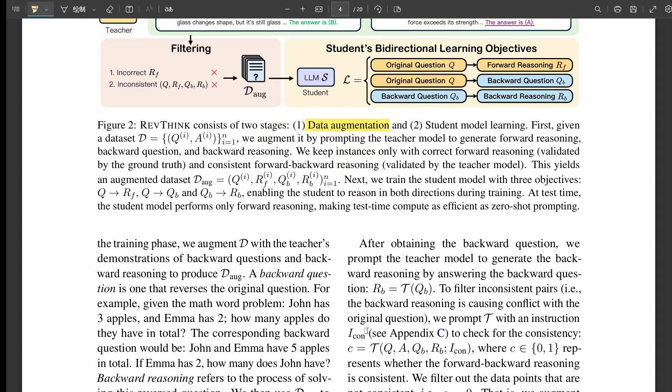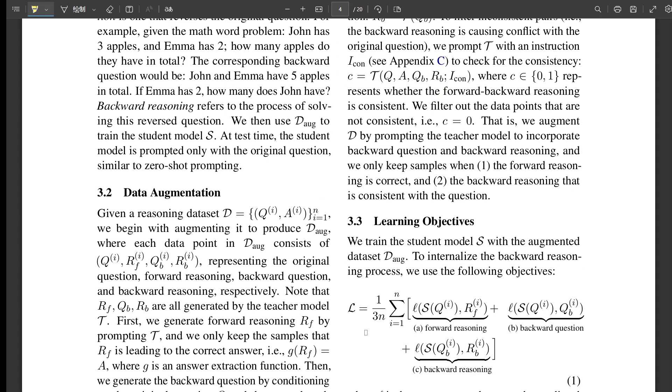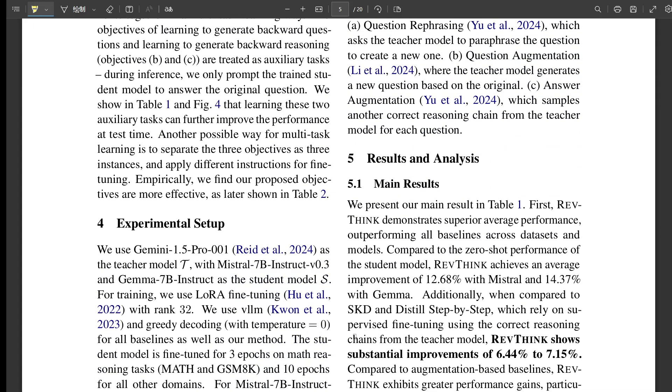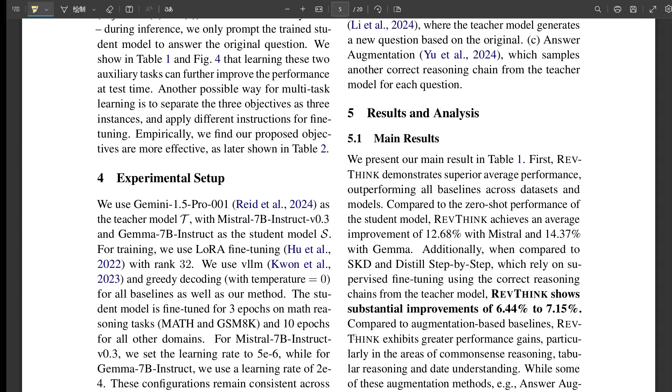What about those different types of problems? They found that Rethink was really good at what they call invertible problems, where if you know the answer, you can work backward to find the original values. Like a math equation, or like a recipe. If you know the final dish, you could probably figure out the ingredients and the steps. Rethink was great at these kinds of problems across all sorts of subjects. But for problems that weren't so easy to reverse, the improvements weren't as big. Which means that the type of problem you're trying to solve really matters. It's not a magic bullet.